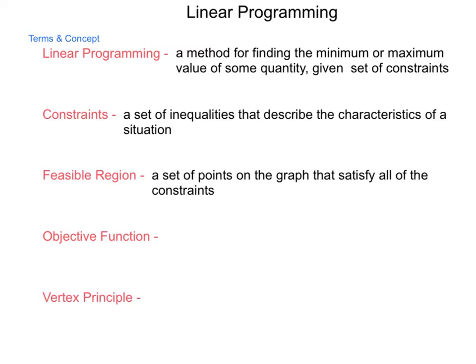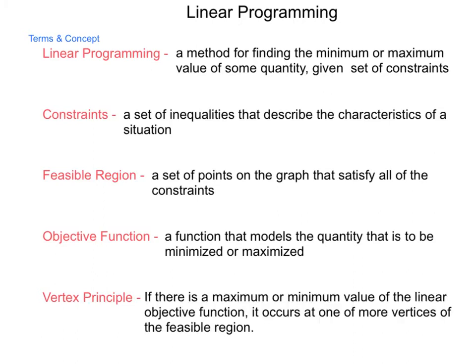As we work through a linear program, we are given an objective function. This is a function that models the quantity that is to be minimized or maximized. One thing that we have learned in mathematics over time is something called the vertex principle. In linear programming, the vertex principle states if there is a maximum or minimum value of the linear objective function, it occurs at one or more vertices of the feasible region.